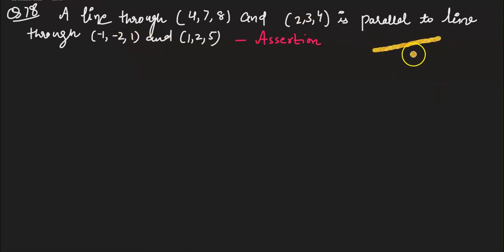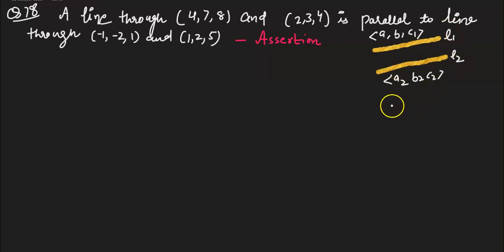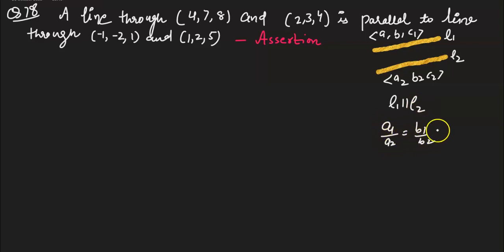When two lines are parallel, their direction ratios are given as A1, B1, C1 for line 1 and A2, B2, C2 for line 2. If two lines are parallel, then the ratio of their direction ratios will be the same.